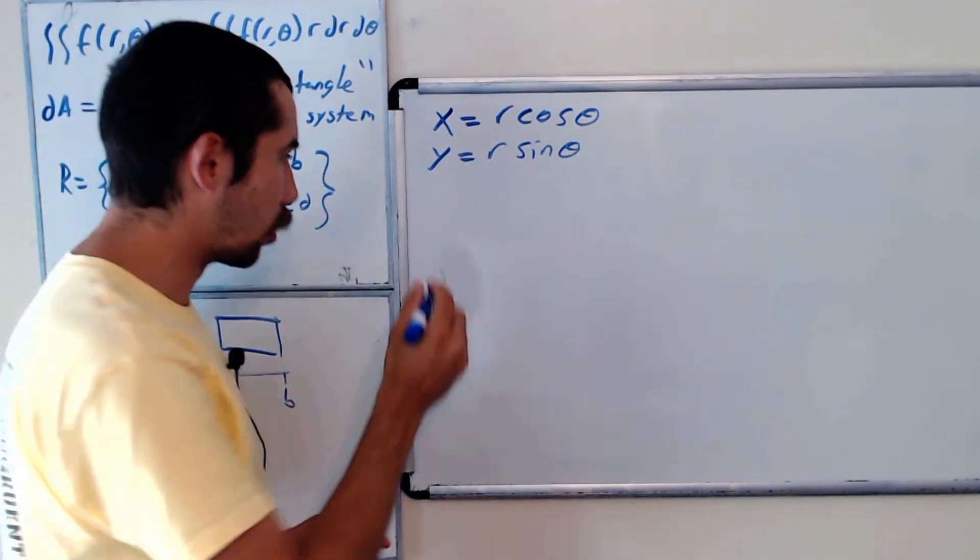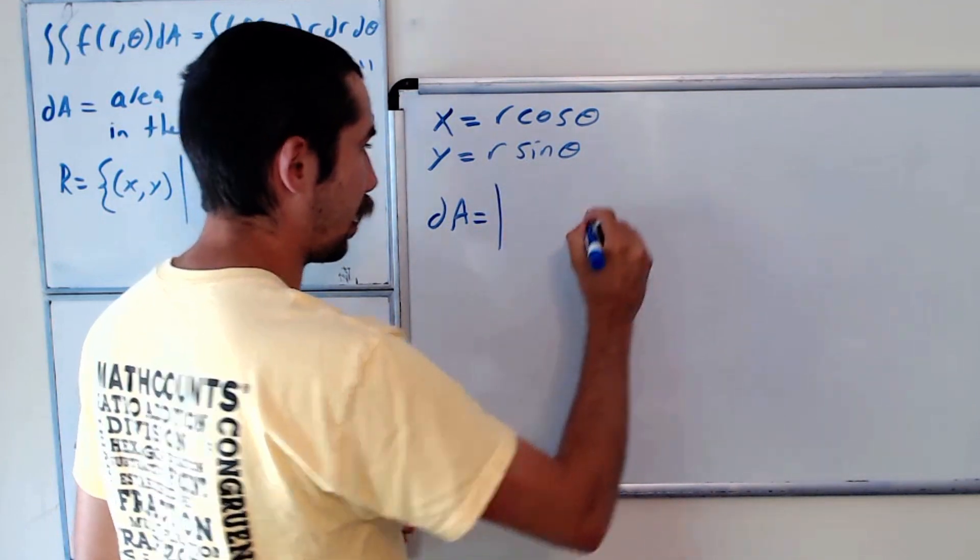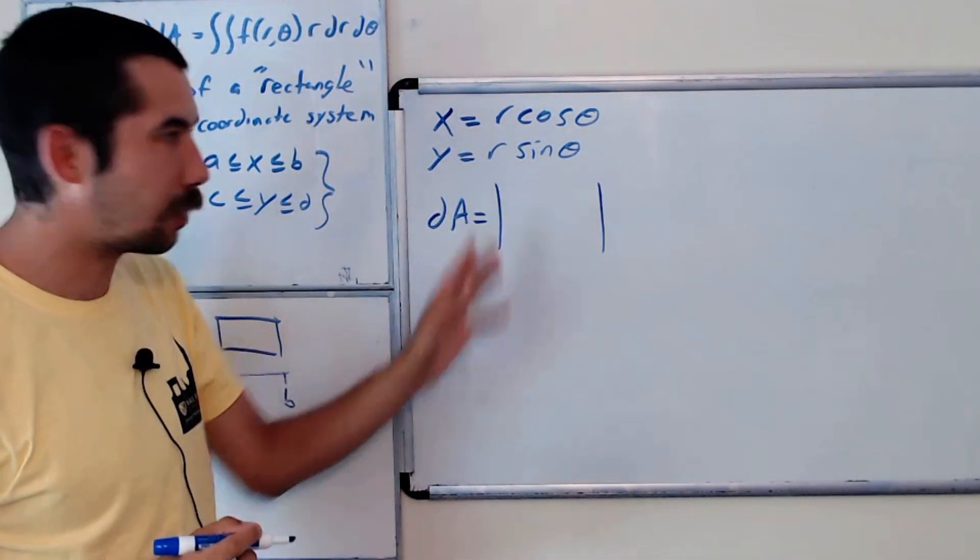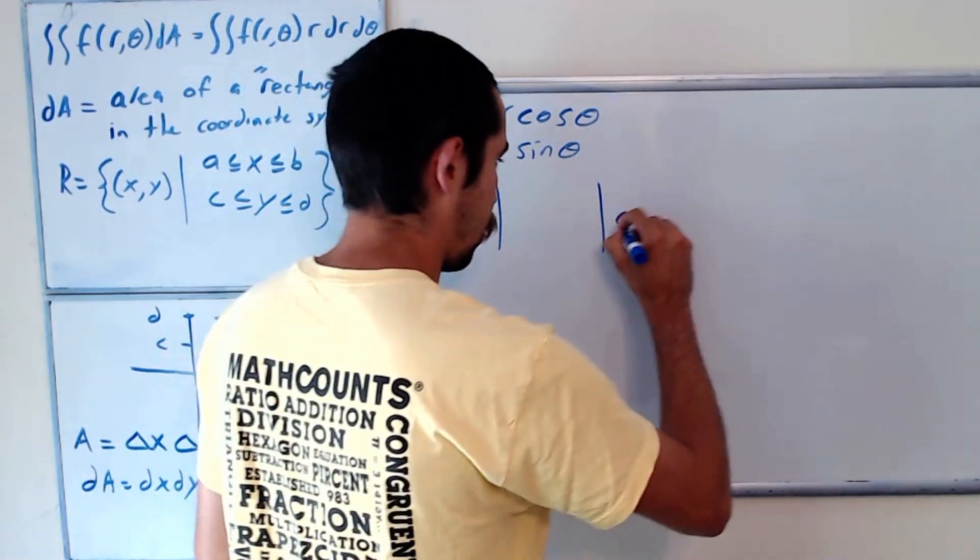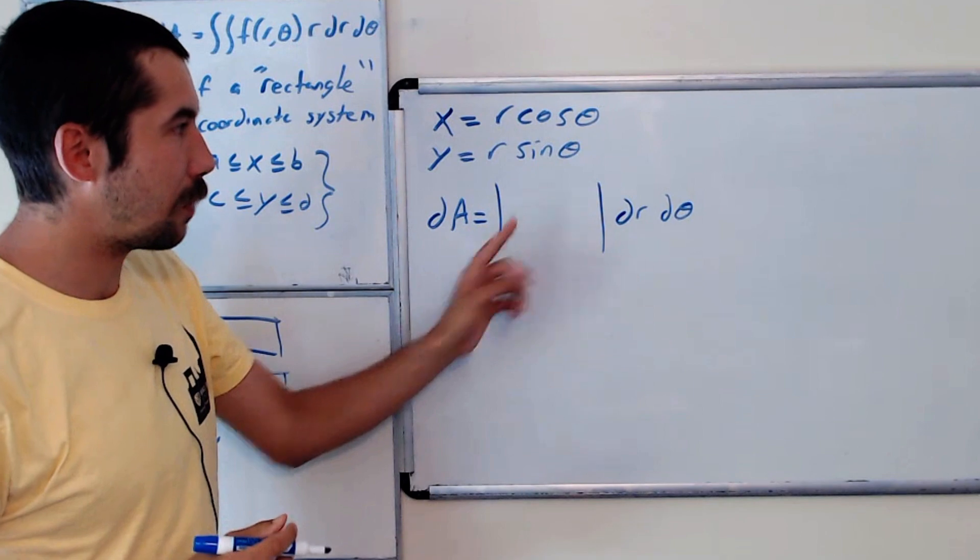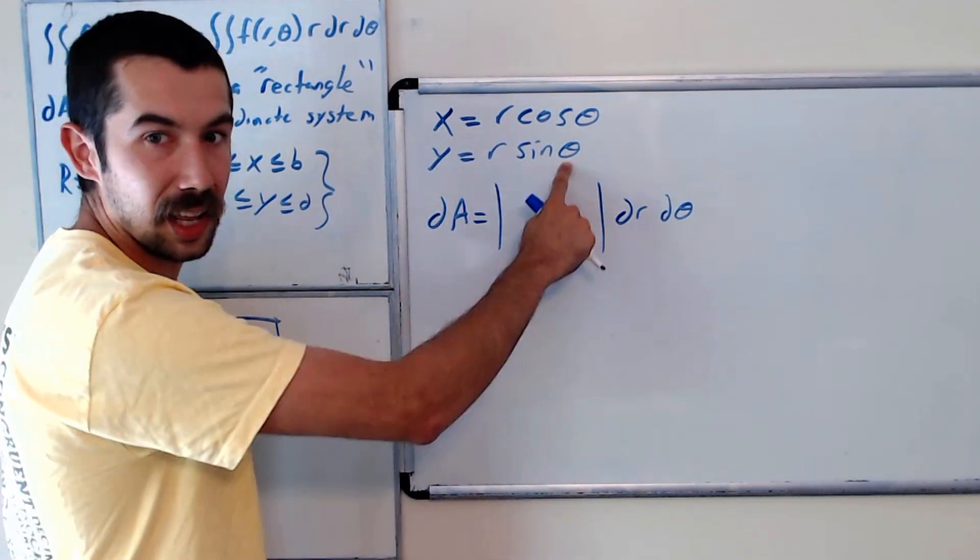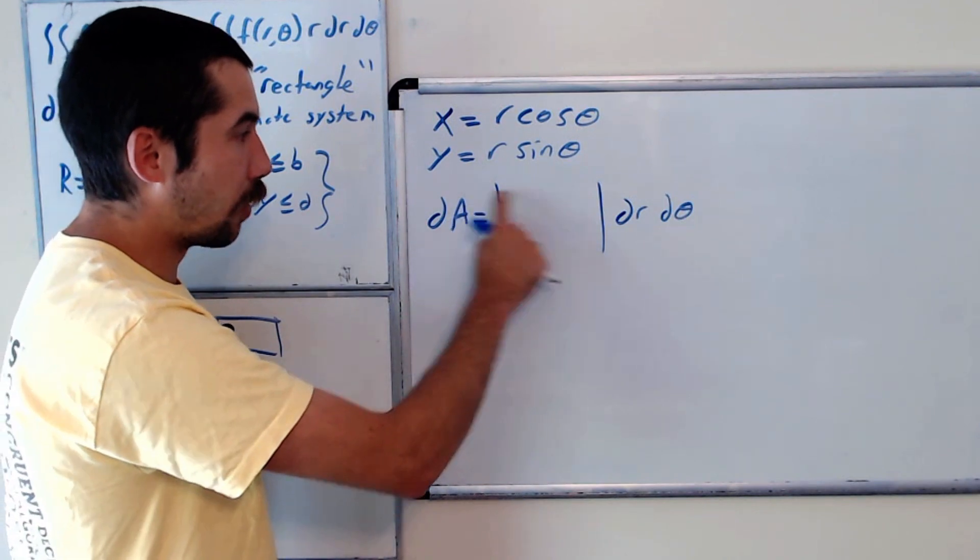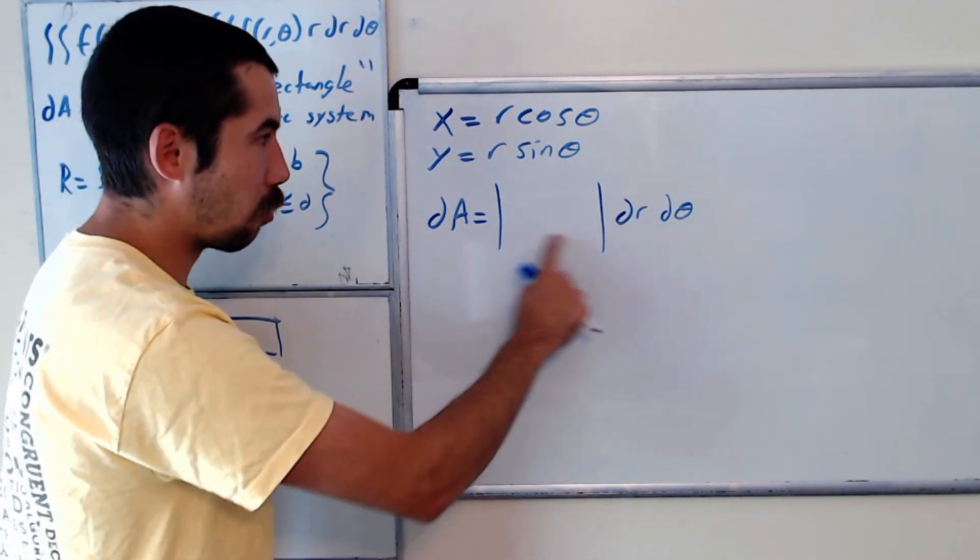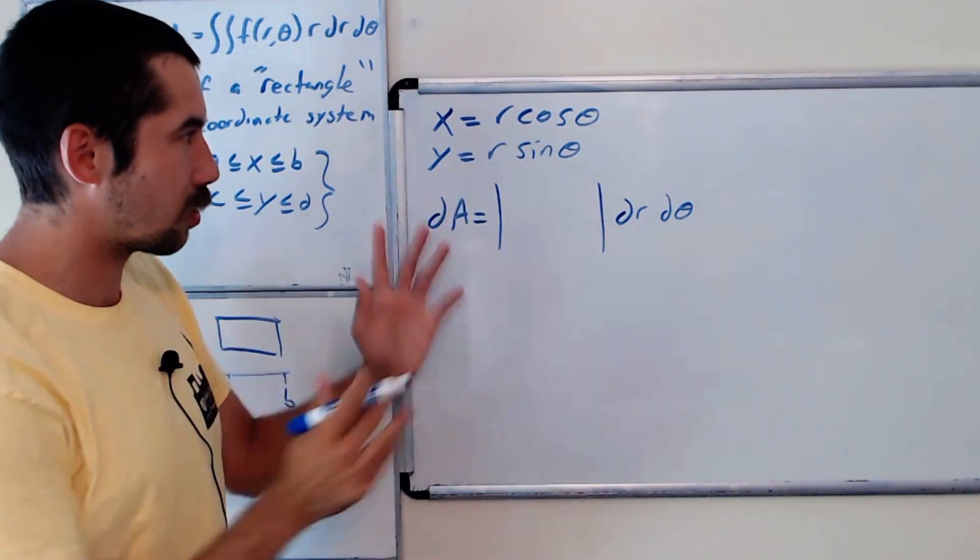And so in general, dA is equal to the Jacobian. So there's going to be some matrix and we're going to find the determinant of that matrix and then times our variables. So what is the matrix? This first column is going to correspond to x, the second column will correspond to y. The first row will correspond to partial with respect to r, the next row partial with respect to theta. You know, it doesn't really matter the orders that we pick here as long as you're consistent.